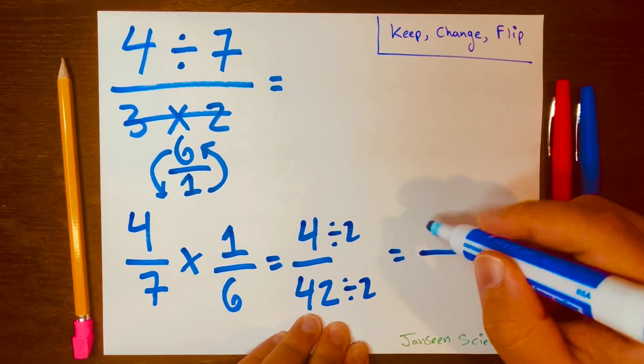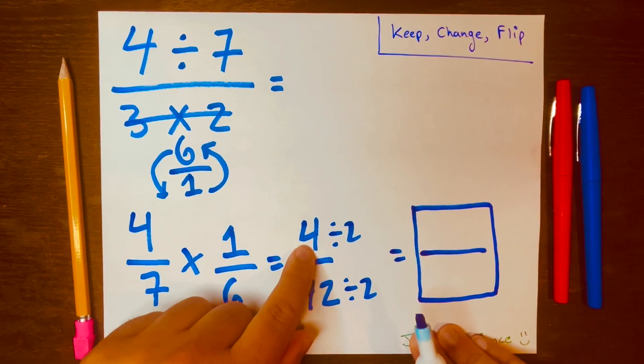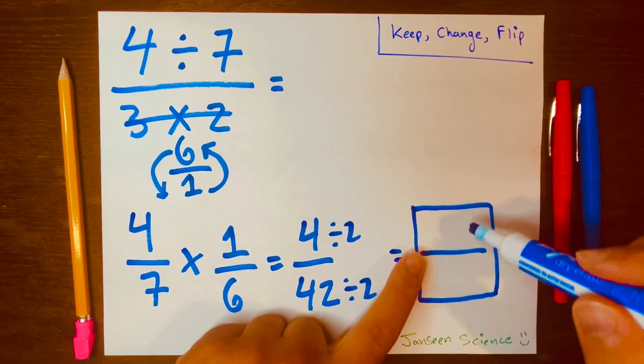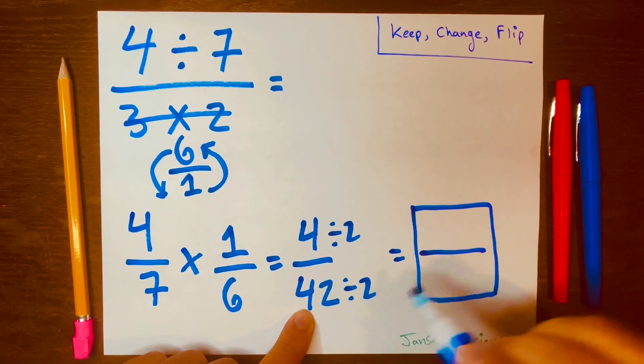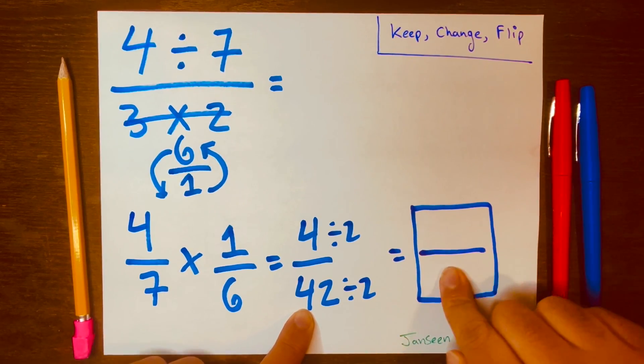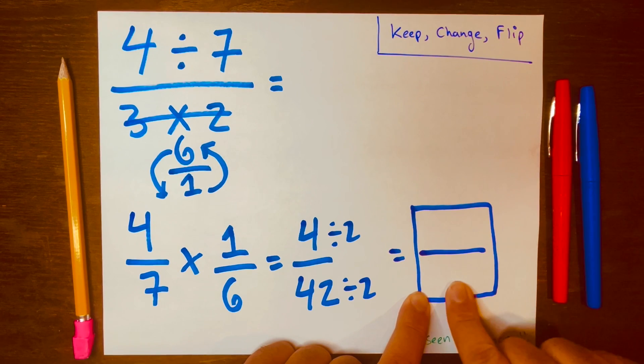And this will be your answer. So 4 divided by 2 goes above the line. 42 divided by 2 will go below the line. And the answer that you get here, that is your answer.